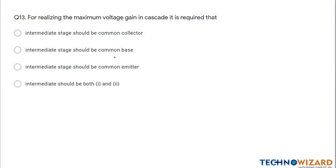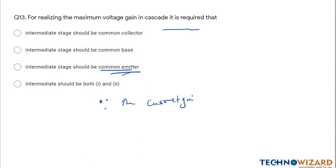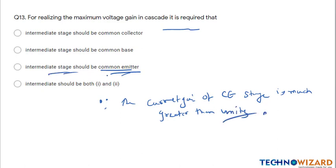Question number thirteen — not for diploma students — this involves a concept in amplifier design. For realizing maximum voltage gain in cascade, it is required that the intermediate stage should be a common emitter configuration. This is because the current gain of a common emitter stage is much greater than unity, so connecting intermediate stages as common emitter also increases voltage amplification.